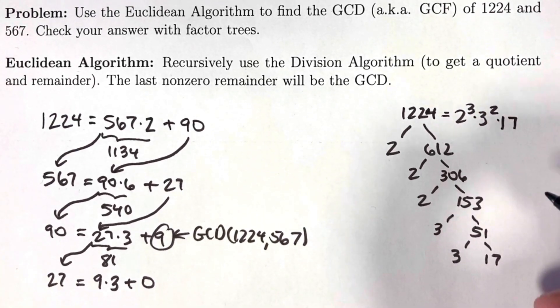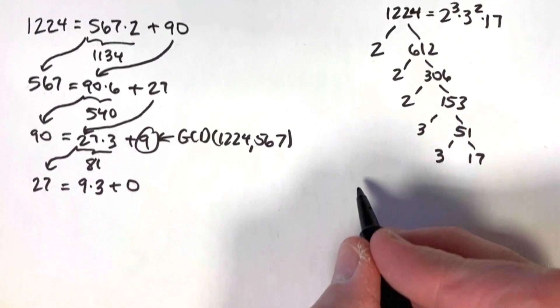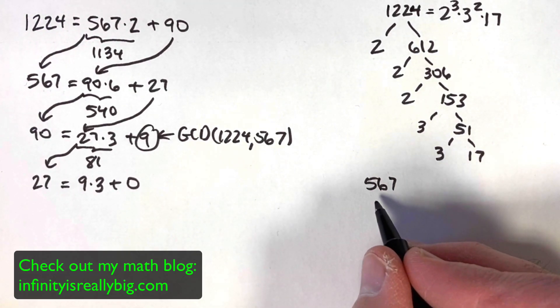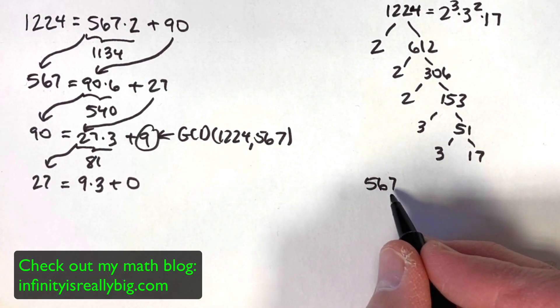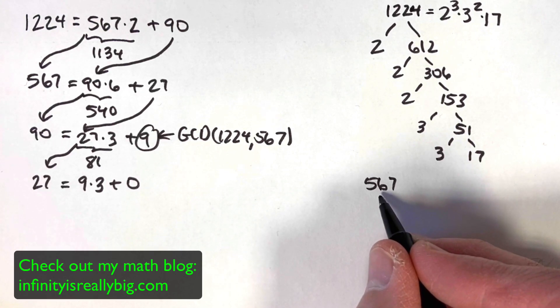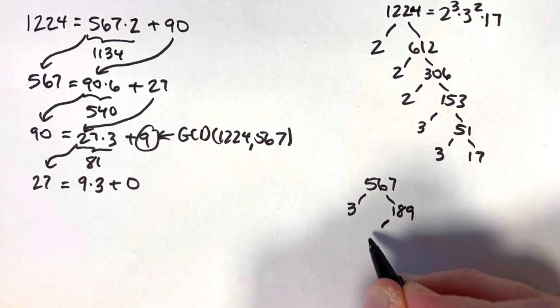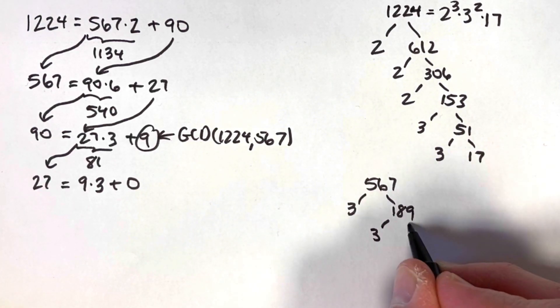Now do the same kind of thing with the other number, 567. 567 is not even. It's not divisible by 2, but if you add its digits, you get 18, which is divisible by both 3 and 9. This is going to be divisible by 9. It's 3 times 189. 189 is 3 times 63.